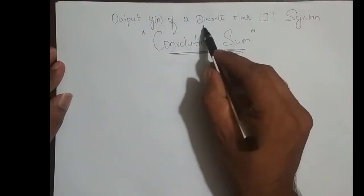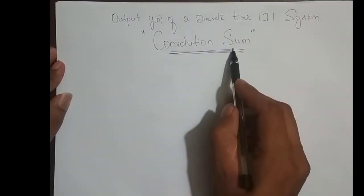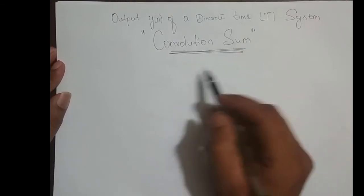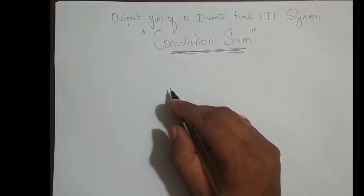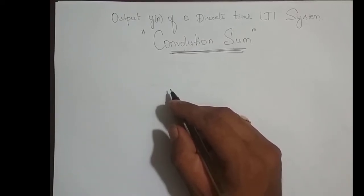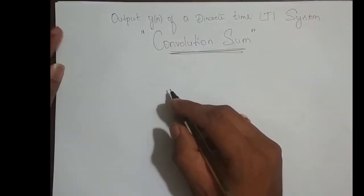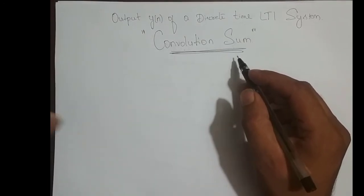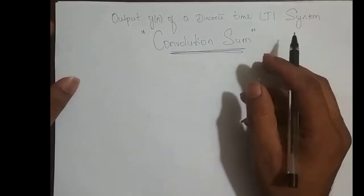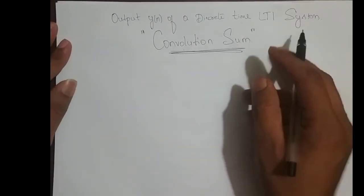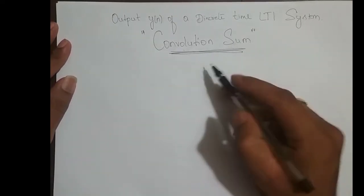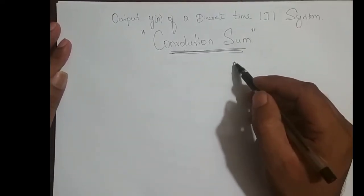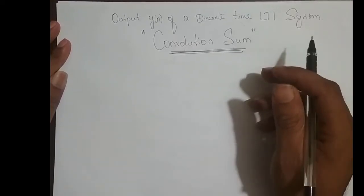If the system is discrete time, we call it as convolution sum. And if the system is continuous in time, we call it as convolution integral. So the difference between convolution sum and convolution integral is: discrete time gives convolution sum, continuous time gives convolution integral. In this video, we will try to derive the convolution sum equation. In the next video, we will try to derive the convolution integral equation.